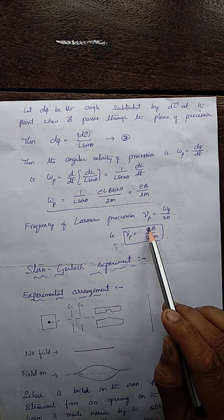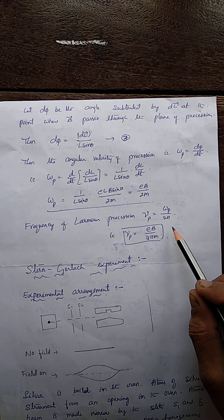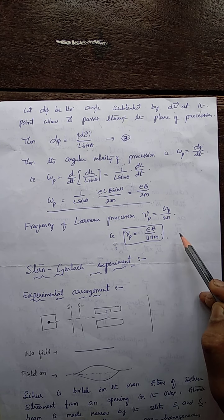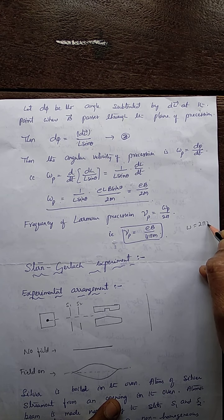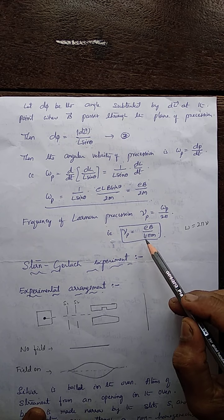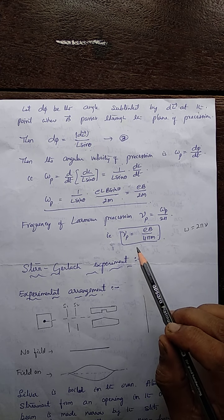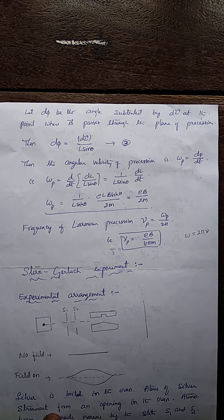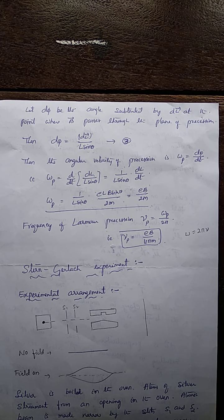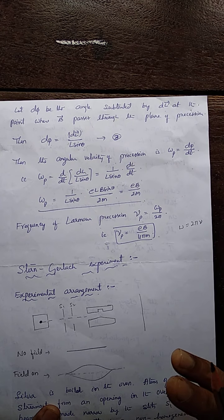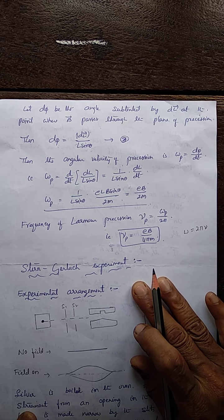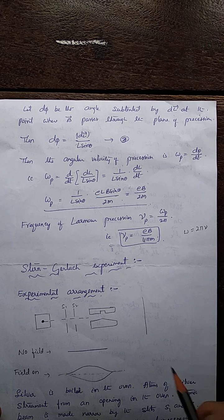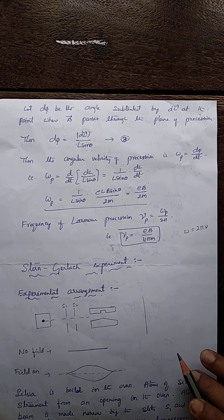This is the Larmor frequency — the frequency of Larmor precession, describing the rotation of the orbital angular momentum vector about the field direction. With this, I stop here, and let us consider the Stern-Gerlach experiment in the next class.